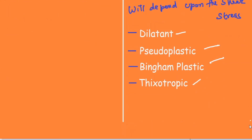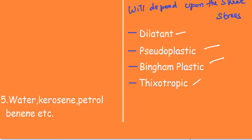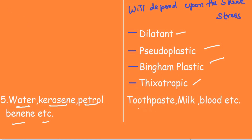The fifth point covers examples. Examples of Newtonian fluids are water, kerosene, petrol, and benzene. Examples of non-Newtonian fluids are toothpaste, milk, and blood, among many others.